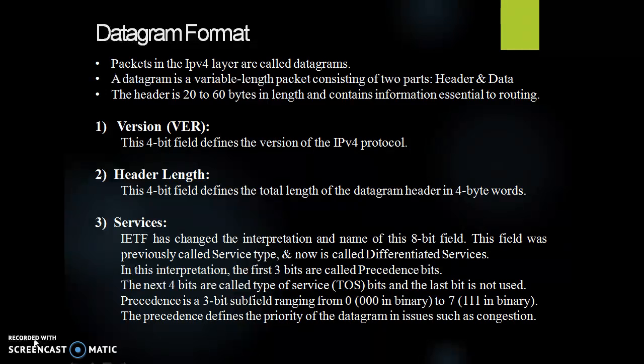If the machine is using some other version of IPv4, the datagram is discarded rather than interpreted incorrectly. Next is header length. This 4-bit field defines the total length of the header, which is variable. When there are no options, the header length is 20 bytes and the value of this field is 5. When the option field is at its maximum size, the value of field is 15.